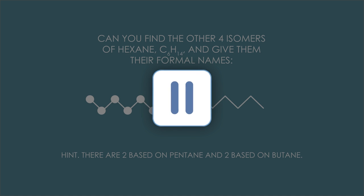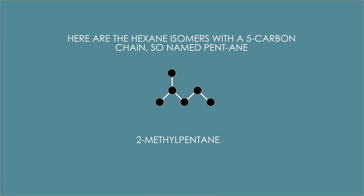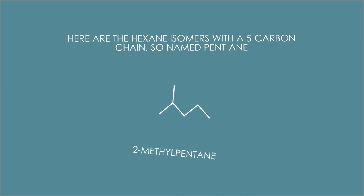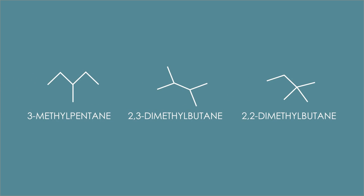Here are the hexane isomers with a 5-carbon chain, named as pentane. First: 2-methylpentane — the methyl group is on the second carbon atom in the pentane chain. Count the atoms: 6 carbons, 14 hydrogens — it's still hexane. The other isomer based on pentane is 3-methylpentane. And there are two more structural isomers based on butane, with only four carbon atoms in the longest chain: 2,3-dimethylbutane and 2,2-dimethylbutane.